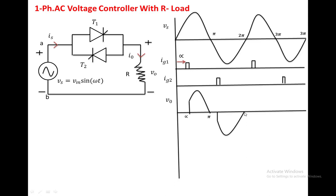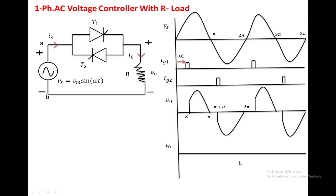The same circuit operation will be repeated for the remaining cycles. If you draw the output current waveform — here we have taken the load as a resistive load — so the output current waveform is the same shape as the output voltage waveform, but the magnitude will be less.